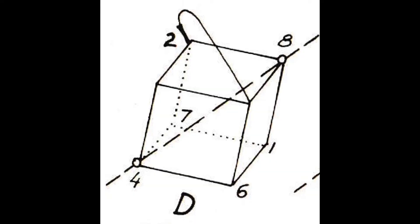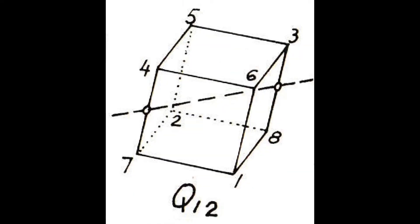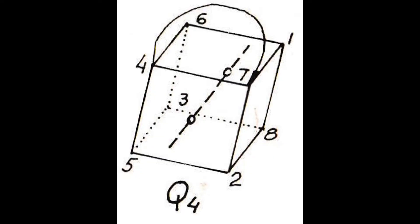He starts with two seed symmetries called D and Q12. D is a third of a turn through opposite corners, and Q12 a half turn through opposite edges. These control the first two sections. But to get the symmetry for the third section, he rotates the cube using symmetry D and then rotates again using symmetry Q12. The combined effect is a new arrangement you can get in one go by doing symmetry Q4 — a rotation of a quarter turn around an axis through opposite faces.